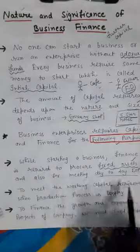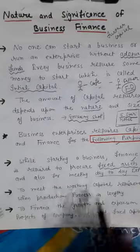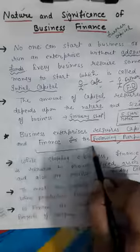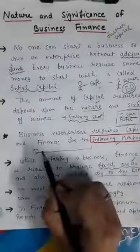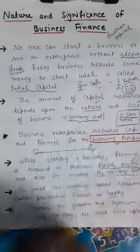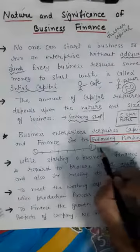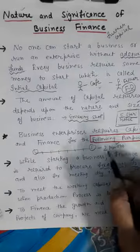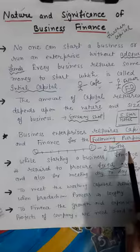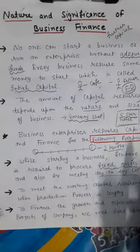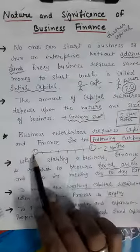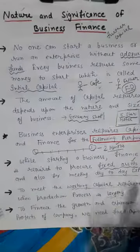Finance is also needed to meet the working capital requirement when the production process is lengthy. For example, suppose your production cycle is such that you bought raw materials, then did some processing, and it took 2 months to convert raw materials into finished goods. During those 2 months, your money is blocked. But during that same period, will you not pay your workers' wages, electricity bills, or building rent? Obviously you will — you have to. So these are called working capital requirements. If your production process is lengthy, your working capital requirement will be greater.